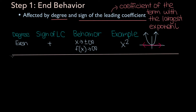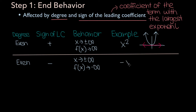Now let's consider the second case. If the degree of the polynomial is still even but the sign of the leading coefficient is negative, then as x approaches plus or minus infinity, f of x will approach negative infinity. An example is negative x squared: the degree is 2 and even, the leading coefficient is minus 1. As x approaches positive or negative infinity, f of x approaches negative infinity.